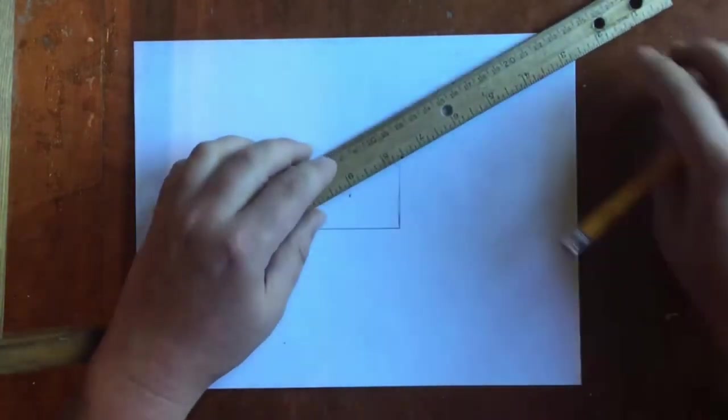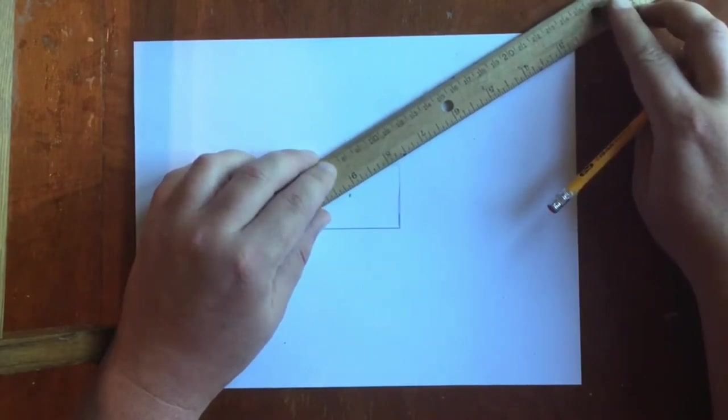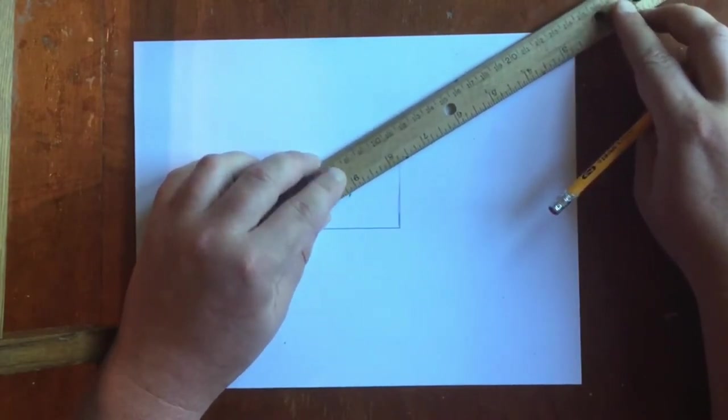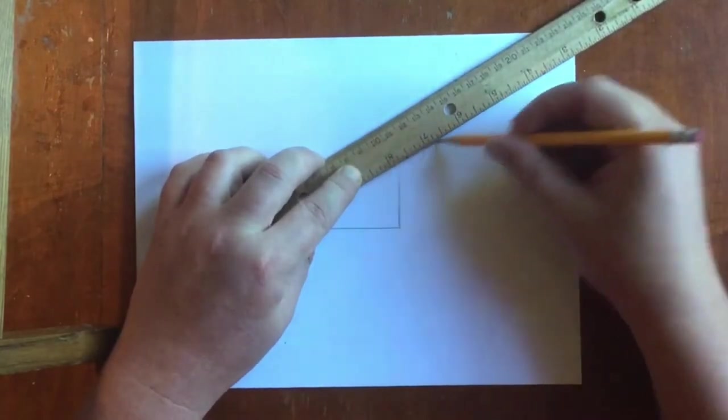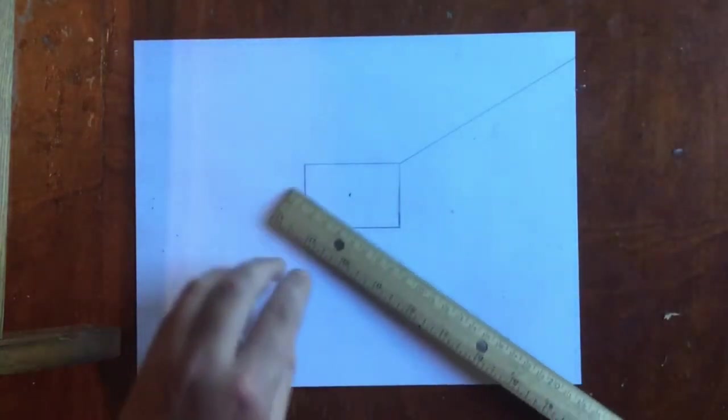Next, using a ruler, I'm going to line that up with the dot in the corner of the rectangle I drew in the middle, and make a line from that corner all the way to the outside of the paper. I'm going to do that on each of the corners.